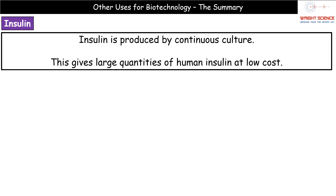Once we've got those, we place them in a fermenter. Bacteria replicate by binary fission, so we can produce large quantities and keep them going on a continuous culture, making sure we've got inlets to add more broth. This means we get large quantities of human insulin at a pretty low cost, because E. coli cells don't require demanding growth conditions.